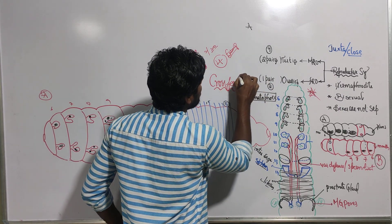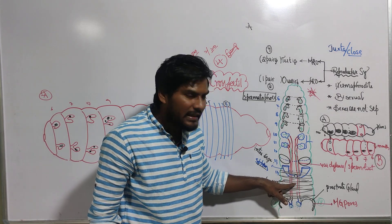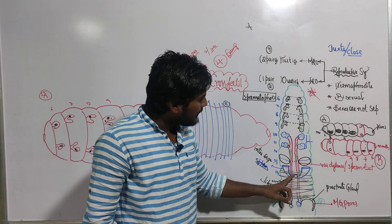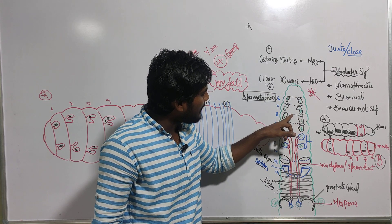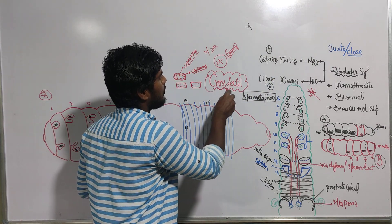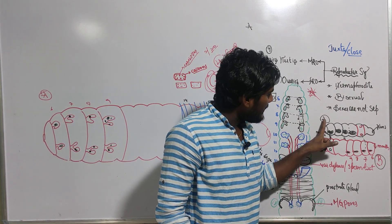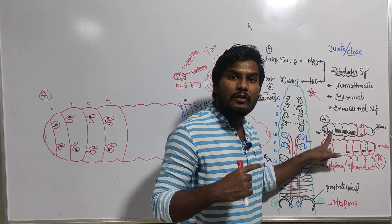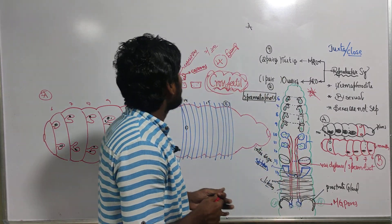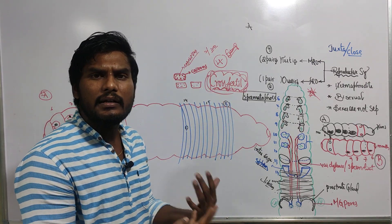This fertilization is called cross-fertilization — very important. Earthworm A's eggs are fertilized by earthworm B's sperms, and earthworm B's eggs are fertilized by earthworm A's sperms. Because one earthworm's egg is fertilized by another earthworm's sperm, it is cross-fertilization, not self-fertilization. The fertilization happens inside the cocoon, which is then released into the soil.